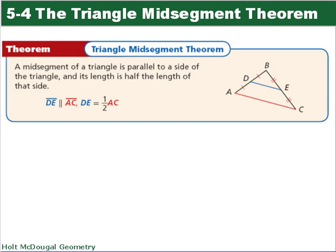So this leads us to our triangle midsegment theorem. And as Ms. Briscoe stated, the midsegment of the triangle is parallel to a side of the triangle and its length is half the length of that side. So we have segment DE as our midsegment. So now our theorem states that DE is parallel to segment AC and DE equals one half AC. So write that into your notes.